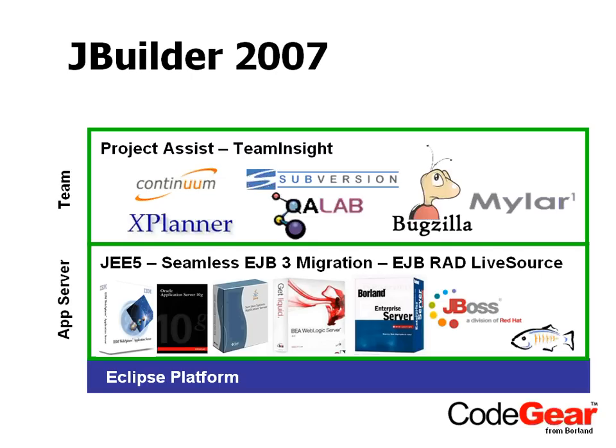Team Insight provides the integration between tools. If you're using five or six different lifecycle roles or tasks — project management, bug tracking, source code control, and continuous builds — Team Insight integrates those together so they're not siloed individual tools but become one lifecycle process. It also provides a portal and management view so that, as a team and as an individual, you can see the health of a project, its status, your individual tasks for the day, and your bugs.